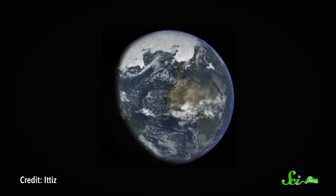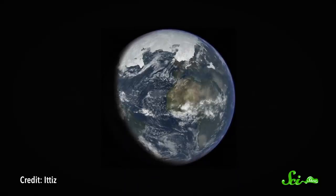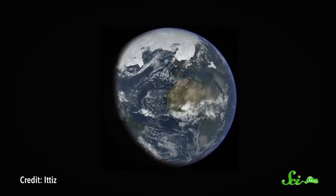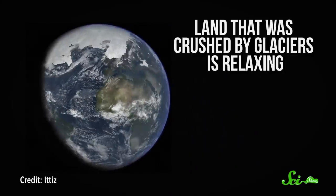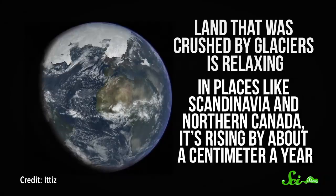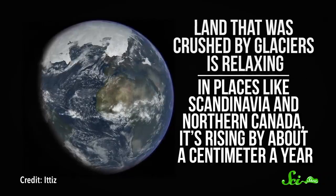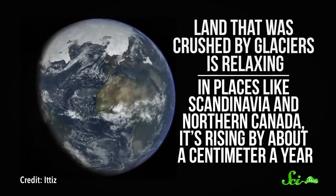Tens of thousands of years ago, parts of Europe and North America were squashed under kilometers of ice. And even though that ice is long gone, the Earth is still bouncing back. Land that was crushed by glaciers is relaxing. And in places like Scandinavia and northern Canada, it's rising by about a centimeter a year. In some places, like the east coast of the United States, land buckled upward near all that ice, so today it's sinking down at a centimeter or so a year.